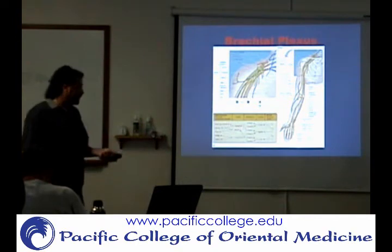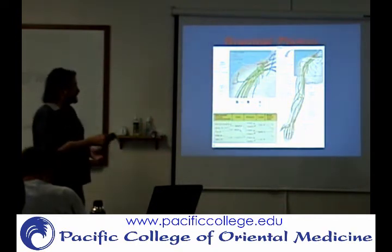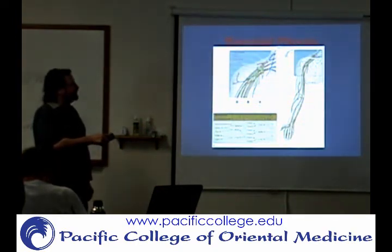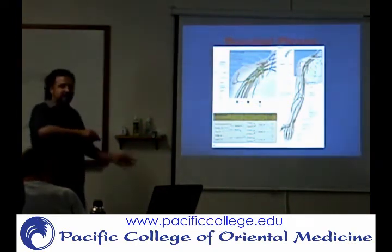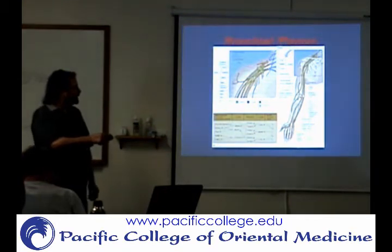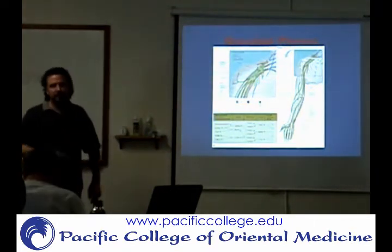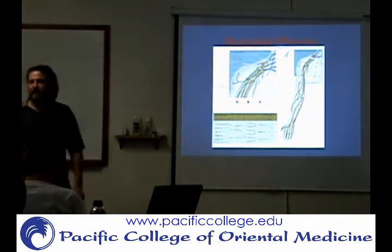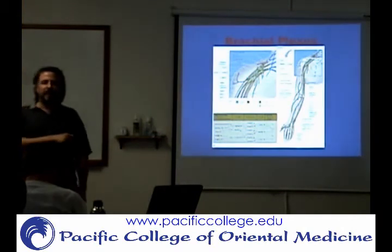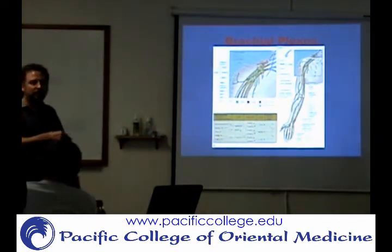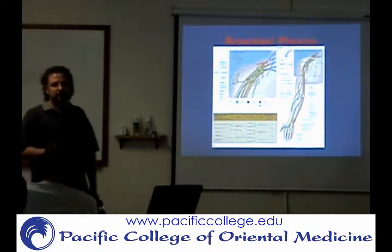They start out with nerve roots here, they mix and match and blend together, and then on the other end they come out as these different named nerves — the radial nerve, median nerve, and ulnar nerve. And they're going to be made up of more than one nerve root.